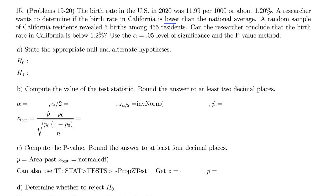So these birth rates are percent or proportions, so this is a hypothesis test of proportion. We took a random sample of California residents, and it revealed 5 births among 455 residents. Can the researcher conclude that the birth rate is below 1.2%? We're using alpha is 0.05 and the p-value method.